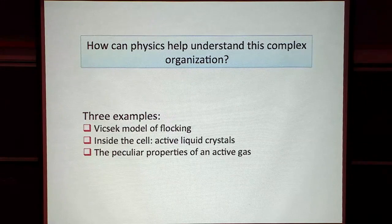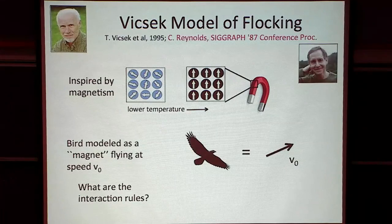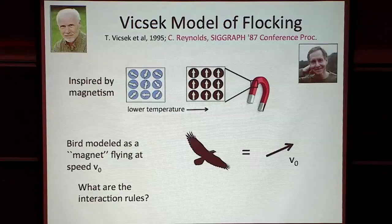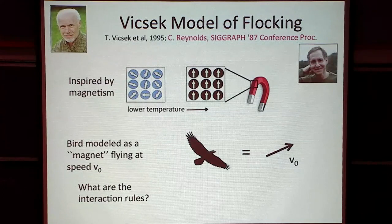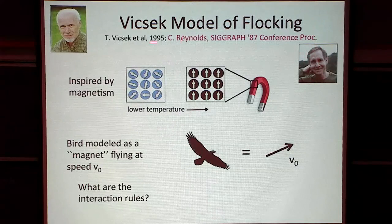Back in 1987, Craig Reynolds, a computer scientist working for the animation industry, developed a computer-based model intended for producing animation — it was used, with some variation, to produce things like the wildebeest stampede in The Lion King. A few years later, a Hungarian physicist, Tomasz Vicsek, not knowing about Craig Reynolds' work, was interested in describing bird flocking and reinvented essentially the same model. Physicists refer to this as the Vicsek model, but credit should originally go to Craig Reynolds.